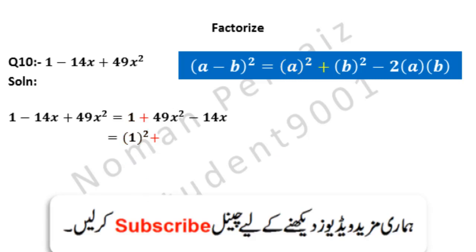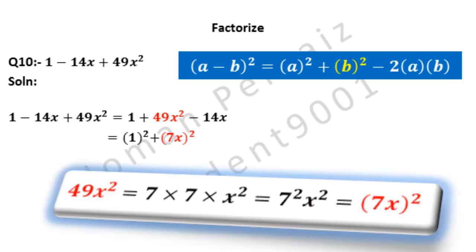Plus is written as it is. Again, 49x square can be written as (7x) whole square. 49 can be written as 7 multiplied by 7, because 7 sevens are 49, then x square. 7 multiplied by 7 becomes 7 square, and x square is written as it is. Because both 7 and x have the same power which is 2, we write them as (7x) whole square. Looking at the formula above, this (7x) whole square is our b square.